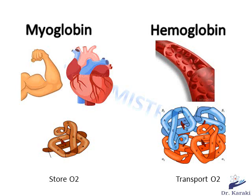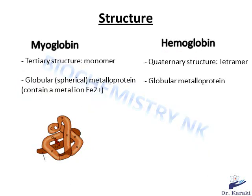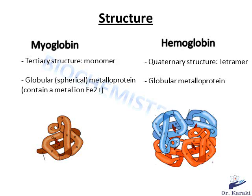Now let's take a look at the structure of these proteins. Myoglobin has a tertiary structure as it's made of a single polypeptide chain folded into a spherical shape, and contains a metal ion Fe2+. For this reason, myoglobin is described as a globular metalloprotein. Hemoglobin is also a globular metalloprotein but has a quaternary structure, made of four subunits — two identical alpha chains and two identical beta chains — arranged in heterodimers (2 α/β). Each of hemoglobin's four subunits is very similar to the polypeptide chain making up myoglobin.